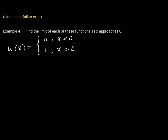Now let's talk about limits and how sometimes they fail to exist. I have three functions that illustrate how a limit may not exist. Each of these functions' limits will not exist, but for different reasons — please note the different reasons for the limit not existing. The first function we are looking at is called the unit step function. I think once we look at the graph, you can understand why it's called the step function.